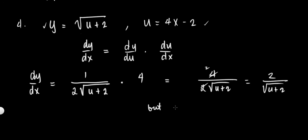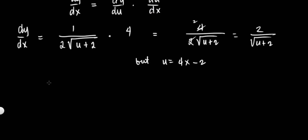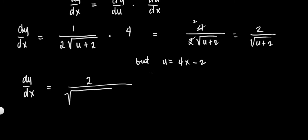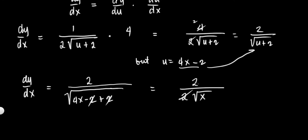But u is equal to 4x minus 2. So dy over dx is equal to 2 over the square root of 4x minus 2 plus 2. Minus 2 plus 2 is 0, so this equals 2 over the square root of 4x. Square root of 4 is 2, so we get 2 over 2 times the square root of x, which equals 1 over the square root of x. This is your answer. You can also rationalize by multiplying by the square root of x over the square root of x.